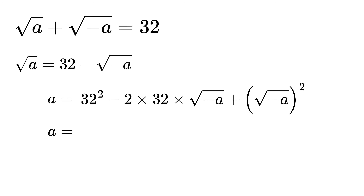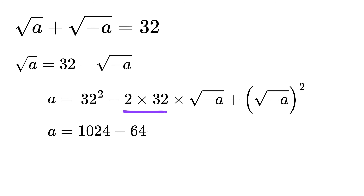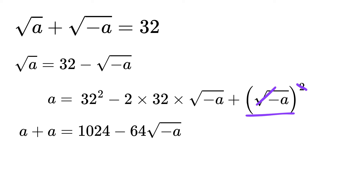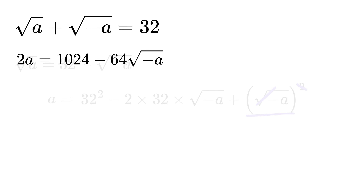Now calculate each part. 32 squared is 1024. Then minus 2 times 32 is minus 64, so we get minus 64 times the square root of minus a. Finally, square root of minus a squared becomes just minus a, because the square root and the square cancel, leaving the original expression under the root, which is minus a. If we bring that minus a from the right-hand side to the left-hand side, it becomes plus a. So we now get a plus a, or 2a, equals 1024 minus 64 times the square root of minus a.